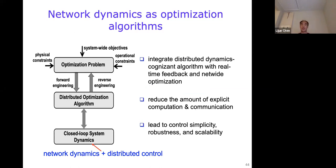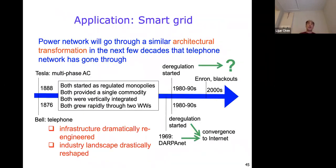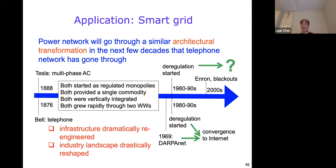Such an approach or framework integrates distributed dynamic optimization algorithms with real-time feedback and a network objective. It has the distinct advantage of reducing the amount of explicit computation and communication, leading to control simplicity, robustness, and scalability. Most of the hard work about computing and communication is implicitly carried out by the dynamic system itself. Central around the network dynamics as an optimization algorithm framework, I have contributed to the development of theoretical foundations and practical algorithms for scalable real-time control and optimization of power systems. The belief is that the power network will go through a similar architecture transformation in the next few decades, similar to the transformation the telephone network went through in the previous two to three decades.